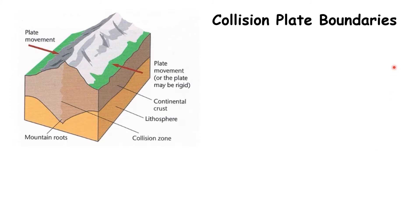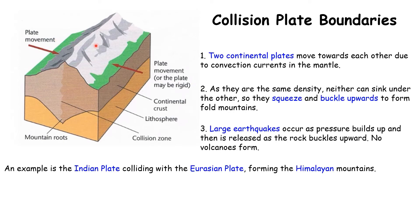A collision plate boundary occurs when a continental plate moves towards another continental plate. Because both plates have similar density, neither can sink underneath the other — instead the ends buckle upwards and downwards, forming fold mountains on the surface. Imagine pushing two Mars bars towards each other: the ends would buckle up and down. An example is the formation of the Himalayan mountains, where the Indian plate collided with the Eurasian plate.